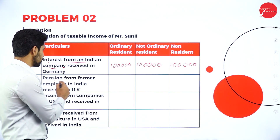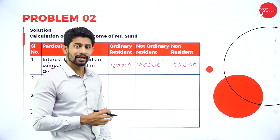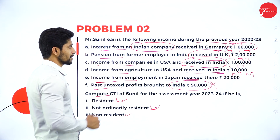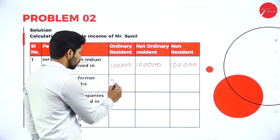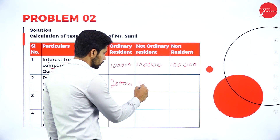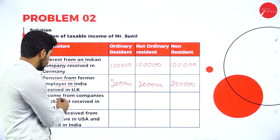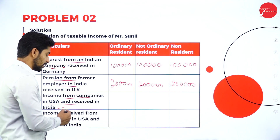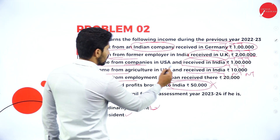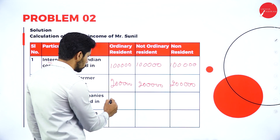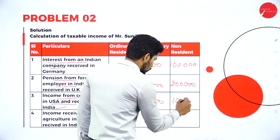Next: pension from former employer in India received in UK — income generated in India, so taxable, taxable, taxable. Amount is rupees 2 lakhs, so 2 lakh, 2 lakh, 2 lakh. Next: income from companies in USA received in India — we have the word 'received in India,' so taxable, taxable, taxable. Amount is rupees 1 lakh — write 1 lakh in all three columns.